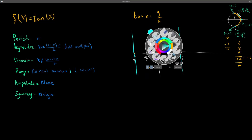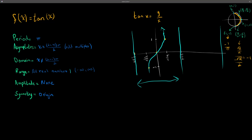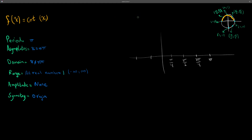Drawing this out, one period of the tangent graph sits between two vertical asymptotes and looks like a rising curve from negative one up through zero to one. Repeating this pattern gives the full tangent graph. The period is pi — one full oscillation. The asymptotes are at odd multiples of pi over two. The domain excludes those asymptote values, the range is all real numbers from negative infinity to positive infinity, there is no amplitude, and the symmetry is about the origin.